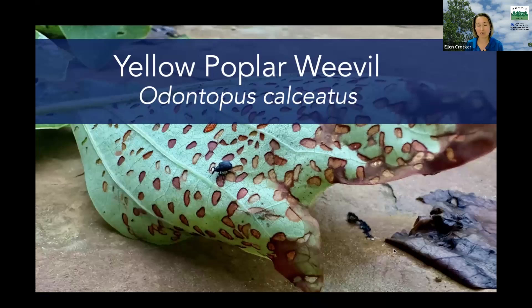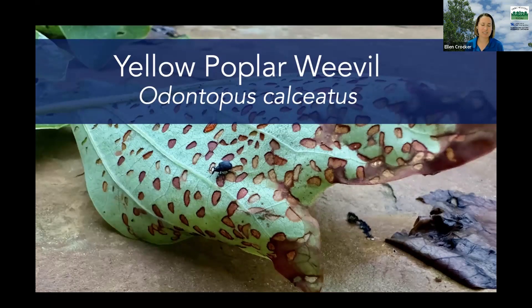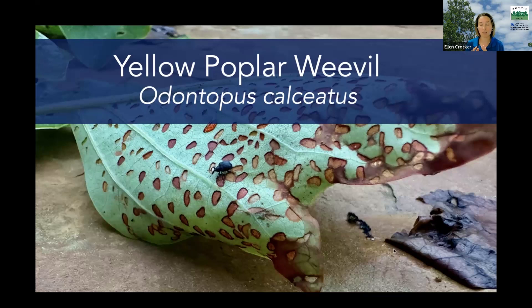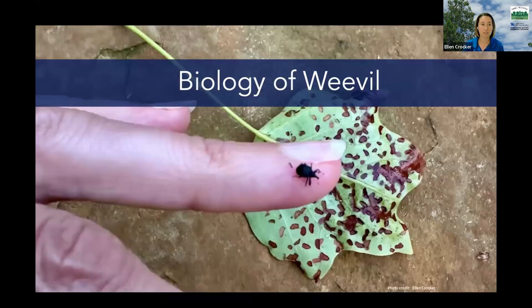This weevil causes damage to the leaves of yellow poplar trees, or tulip trees if you prefer. There are different names for the same tree, as well as other species. Both the adults and the larvae of this insect feed on those leaves, and while its impact can be very noticeable and alarming, this is a native insect that typically does not cause severe problems. Today I'm going to talk about yellow poplar weevil — what it is and what it's doing in your trees.